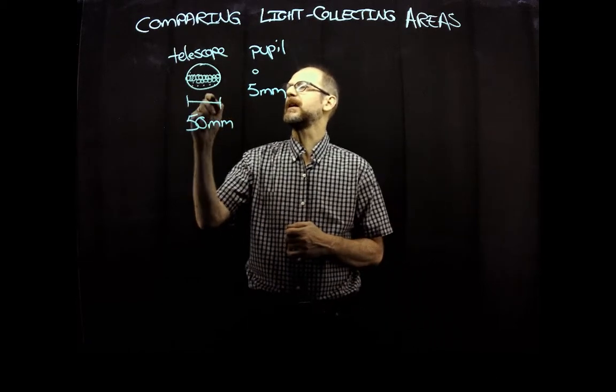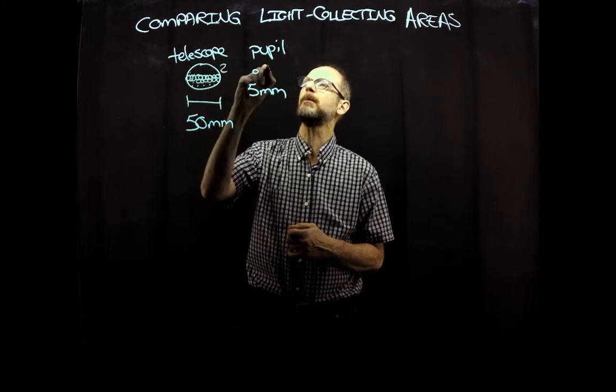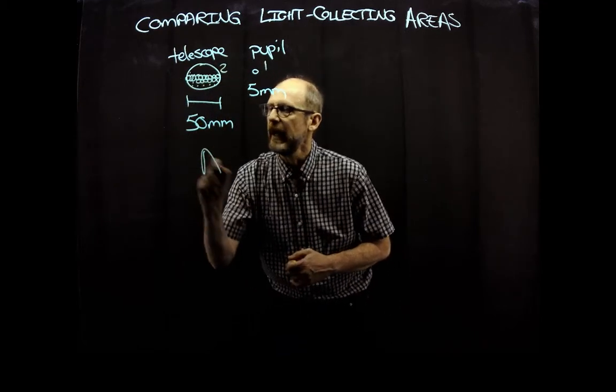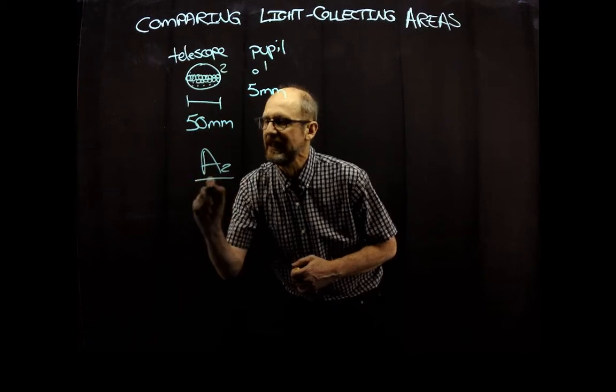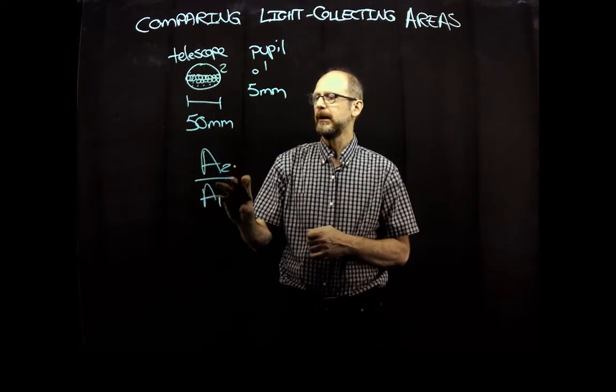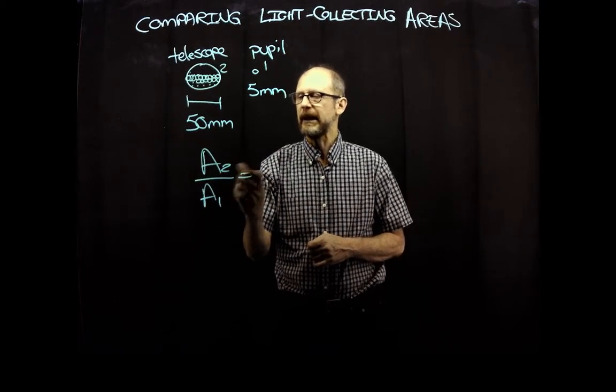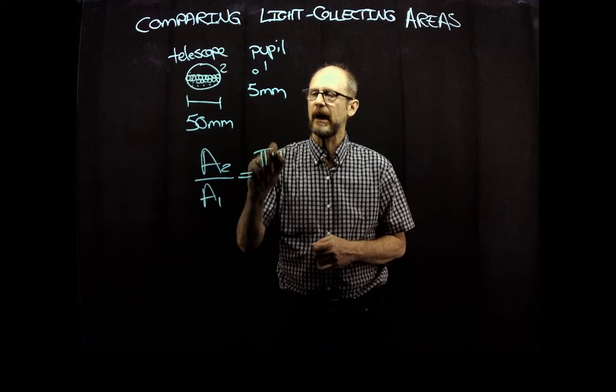And so I'm going to call the telescope, I'm going to call it number two, I'm going to call the pupil number one. And so what we want to know is what is A2 divided by A1? What's the area of circle two compared to the area of circle one?